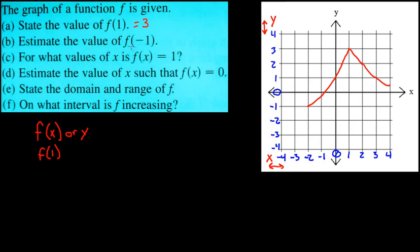It says estimate the values of f at negative 1. So it's the same thing. So you find your x value down here. You've got your negative 1, and you come up until you hit the corresponding y value. And it looks like it's going to be about a negative 0.2. So, because here's the y values, right here, negative 0.2.